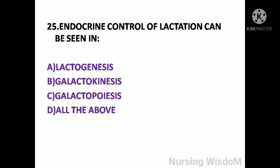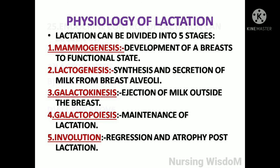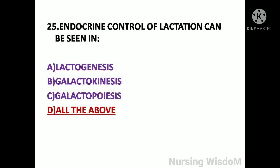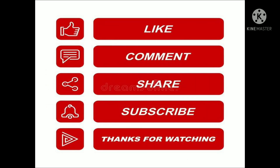Next question: Endocrine control of lactation can be seen in — option A: lactogenesis; option B: galactokinesis; option C: galactopoiesis; option D: all the above. Physiology of lactation can be divided into five stages: 1) mammogenesis — development of the breast to a functional state; 2) lactogenesis — synthesis and secretion of milk from breast alveoli; 3) galactokinesis — ejection of milk outside the breast; 4) galactopoiesis — maintenance of lactation; 5) involution — regression and atrophy post-lactation. So here the answer is option D, all the above. I hope you understood. Thanks for watching.